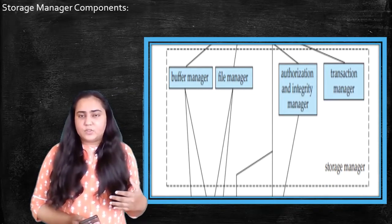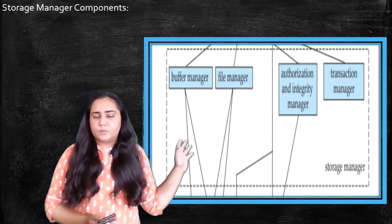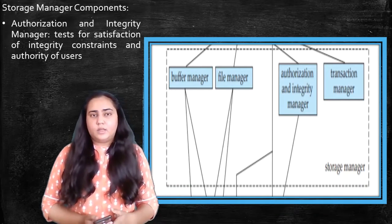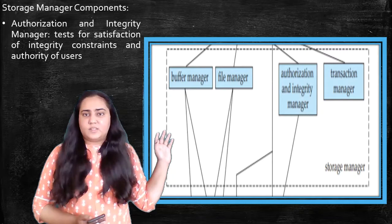Now we're going to look at the storage manager components, and you can see there are four components. The first one is the authorization and integrity manager. It tests for satisfaction of integrity constraints and authority of users. What are integrity constraints? Integrity constraints are constraints that are set up by the person who made the database in order to ensure the correctness of the database.